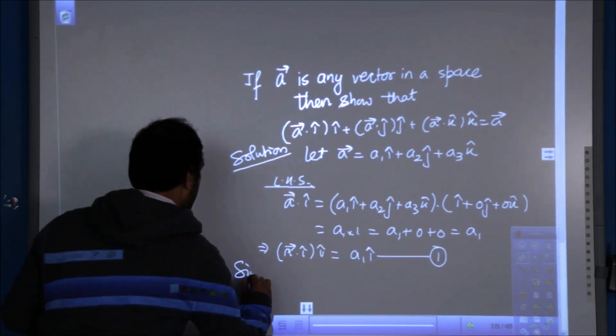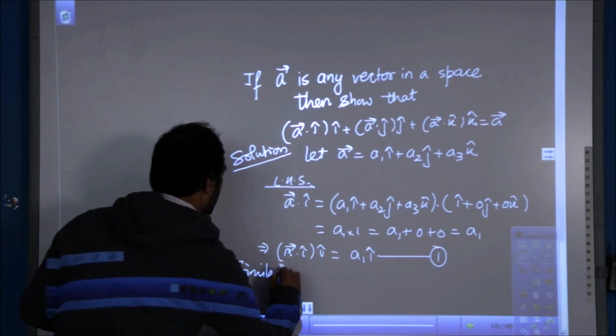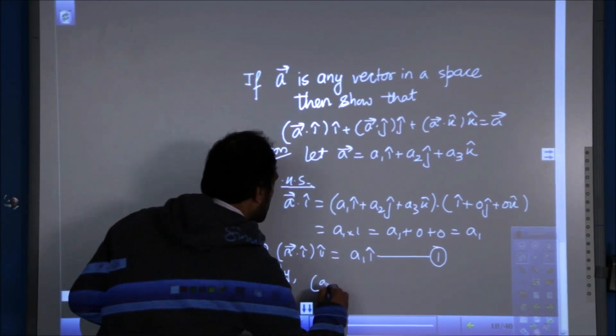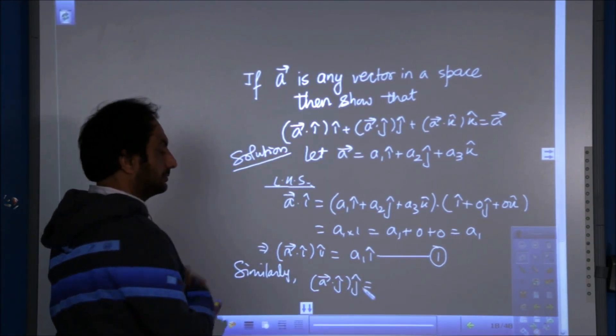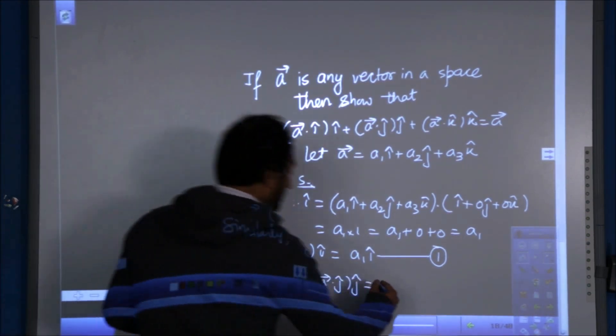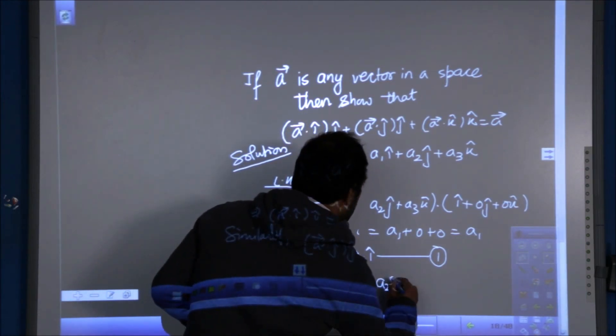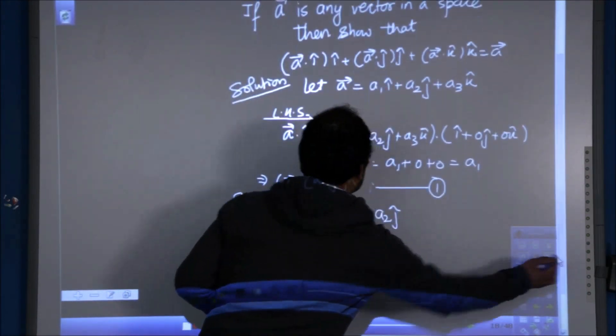Similarly, what is a dot j with j? You will say a2 and j. Yes, it is a2 with j.